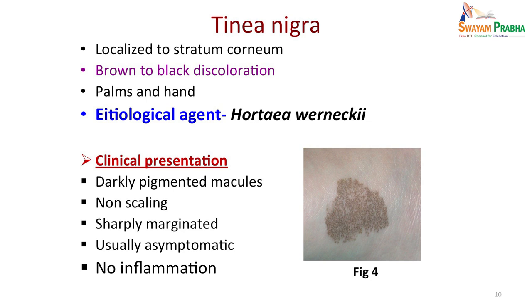Another superficial skin infection is tinea nigra. It is again localized to the stratum corneum, but here you get brown to black discoloration patches, usually seen on the palms and hands rather than the back. The etiological agent is Cladosporium werneckii, a deeply pigmented fungus. Clinically the patient presents with dark pigmented macules that are non-scaling, sharply marginated, and asymptomatic — no inflammation and no itching.